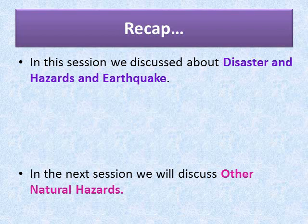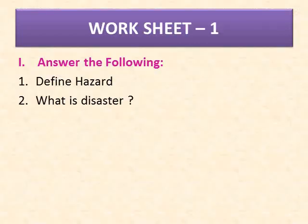Natural hazards are natural phenomena that might have a negative impact on humans or the environment, and we can classify them into two categories: geophysical and biological. We also learned that hazards become disasters when they cause widespread destruction of property and human lives. In the next session we will discuss other natural hazards.